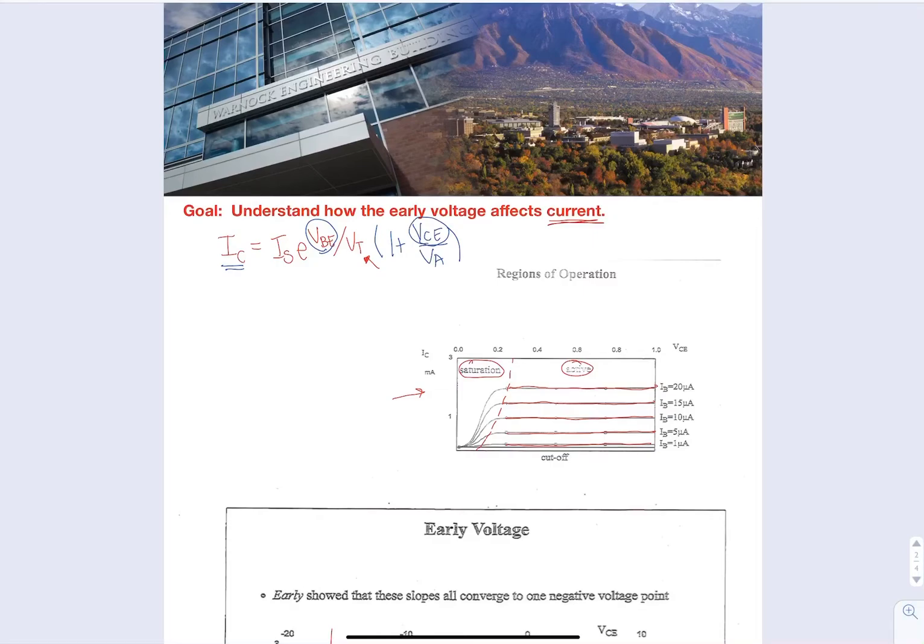We don't account for this in hand analysis, but when you simulate the BJT, you will see some differences in currents than you expect. One of them could be because of this early effect.